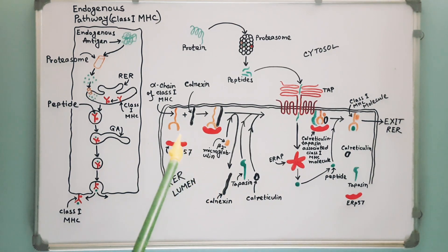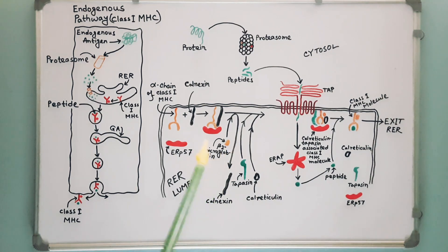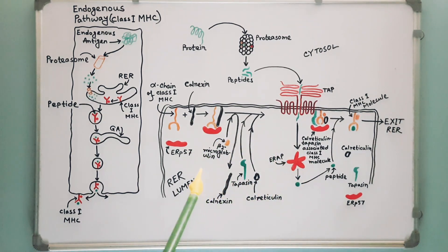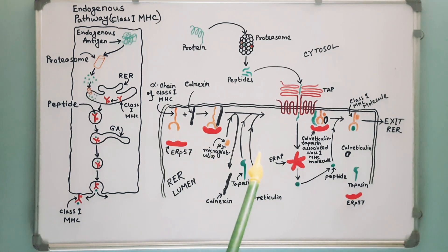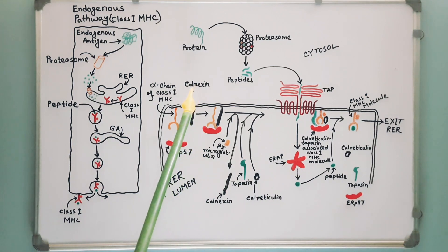The alpha chain and beta-2 microglobulin components of the class 1 MHC molecule are synthesized on ribosomes on the rough endoplasmic reticulum. The assembly process involves several steps and includes the participation of molecular chaperones that facilitate the folding of polypeptides. The first molecular chaperone involved in class 1 MHC assembly is calnexin.